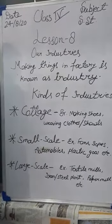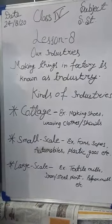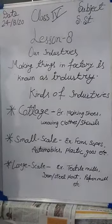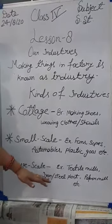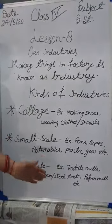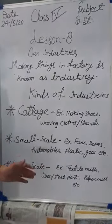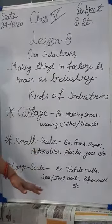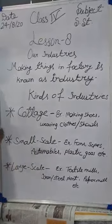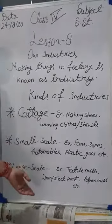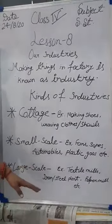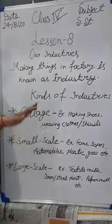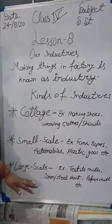Next is power — power to run machines. Third is machines, because large scale industries need big machines. And they need workers who will handle those machines. So these are the types of industries: cottage, small scale, and large scale industries.